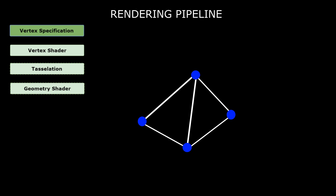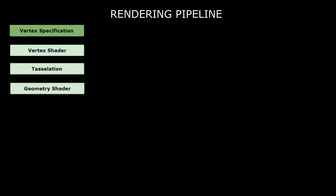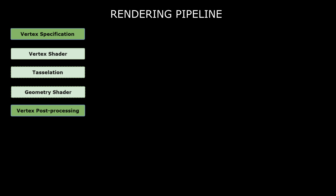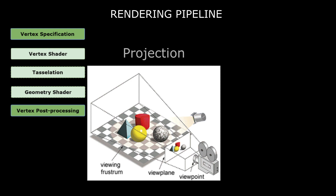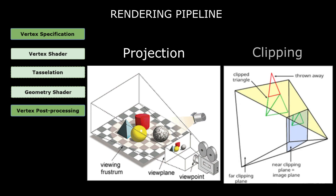The next step is vertex post-processing, a stage where we use the scene camera to project our scene into something called view space. This stage is also performing clipping, which will discard all vertices that are outside of the frustum view of our camera. This is a fixed step and we don't have much control over it.